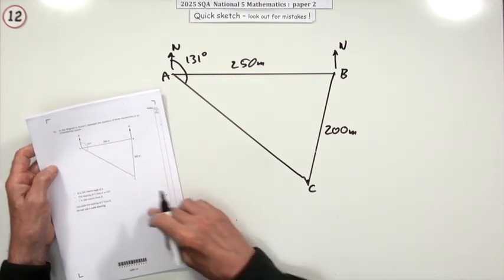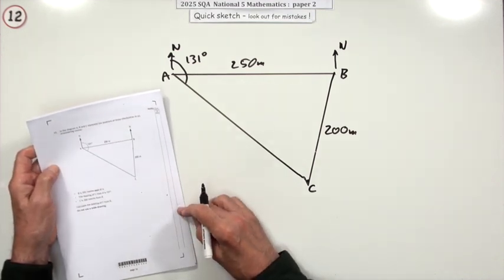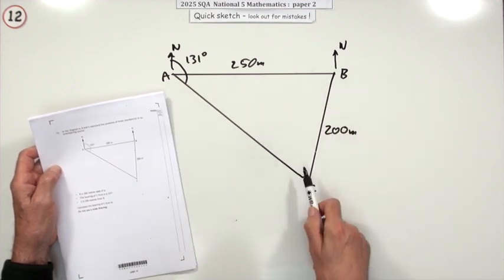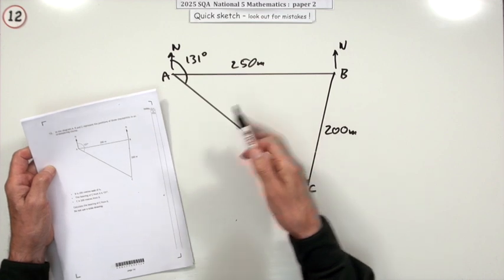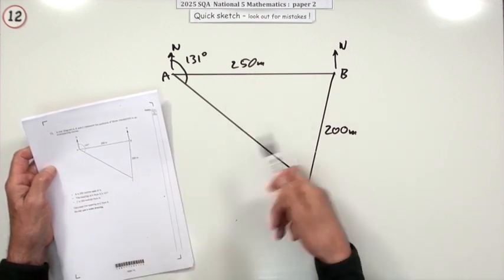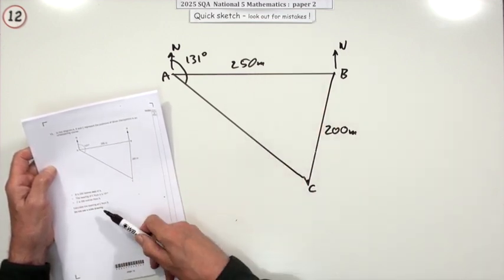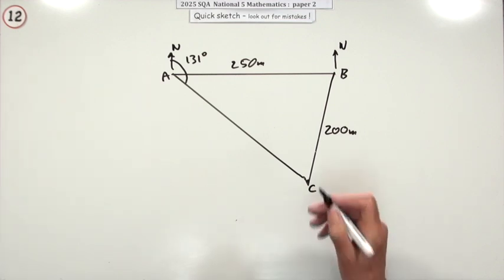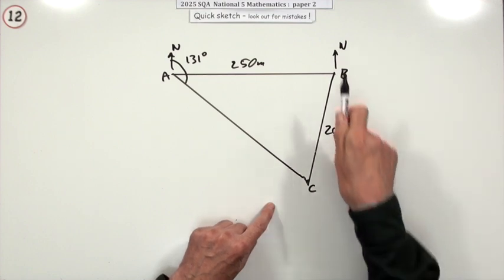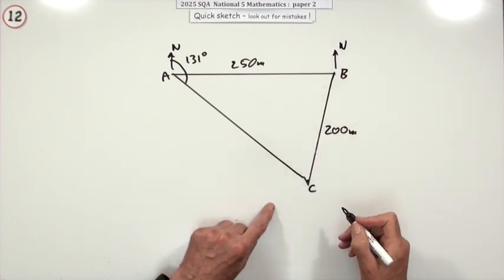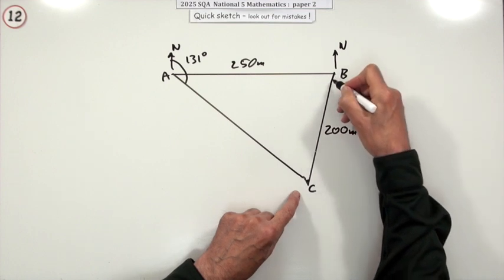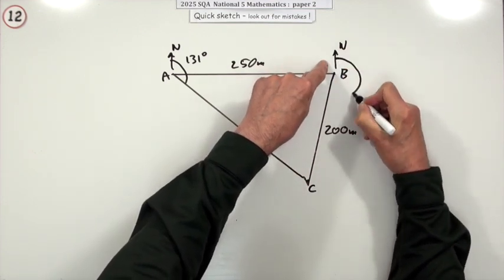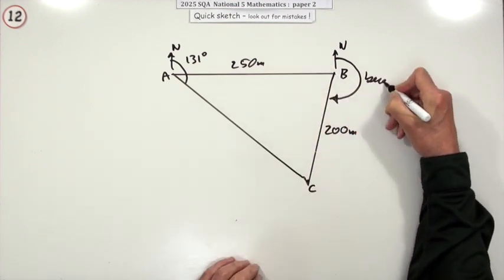Number 12. That's obviously the scalene triangle question, sine rule or cosine rule. In diagram A, B and C are three checkpoints in an orienteering course. What's the bearing of C from B? Now, the bearing from a certain place is the angle from north clockwise. So what's required is if it's C from B, it means you're standing at B, you take north and you say, how many degrees is that round? That's the required bearing.